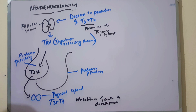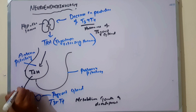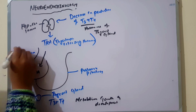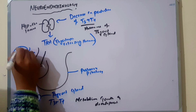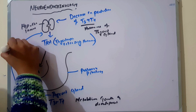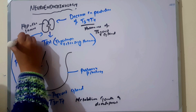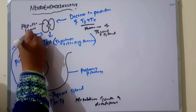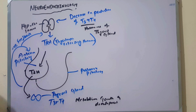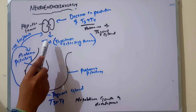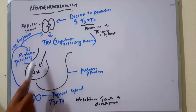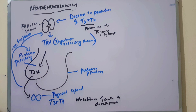The thyroid gland then gives negative feedback to the anterior pituitary and to the hypothalamus. Through negative feedback, it controls the production of T3 and T4.